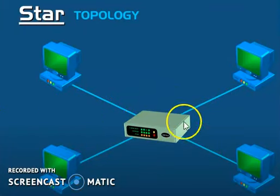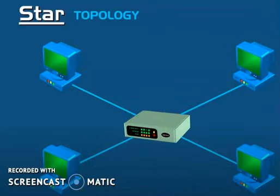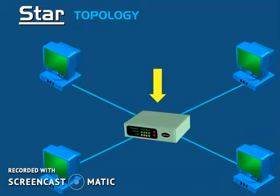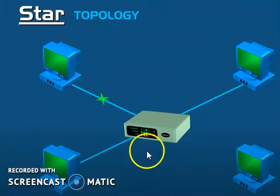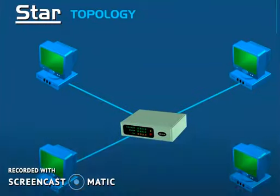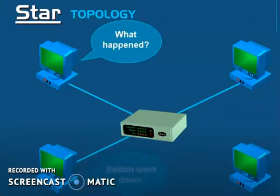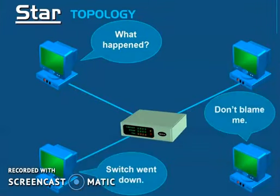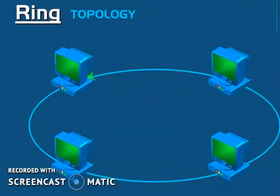The first topology is star topology. There is a central device — a hub or router — and multiple workstations or computers are connected to it. All data transmission goes through the central hub. If a connection from the hub to a computer is disconnected, only that computer is affected and the rest of the network keeps operating. However, the disadvantage is that if the central hub or switch goes down, the entire network cannot operate.